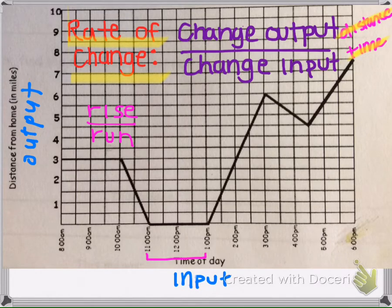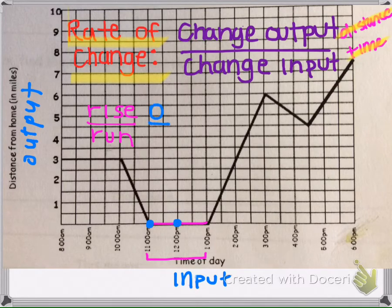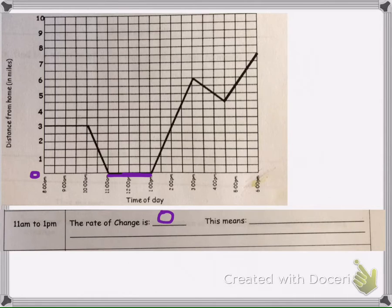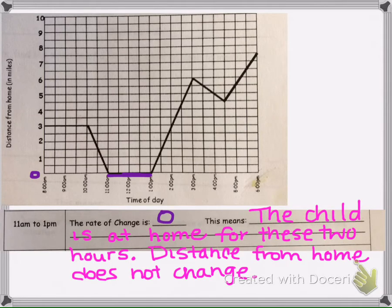Looking at the next interval from 11 to 1 p.m., the graph shows a horizontal line again. All horizontal lines have a slope of zero — a rate of change of zero. If we pick two points, the rise is 0 and the run is 2, and 0 divided by 2 is 0. Notice here that the distance from home is 0, so for those two hours the child remains at home. The child is not moving, and the distance from home does not change.